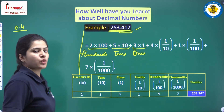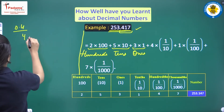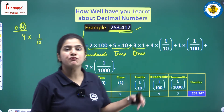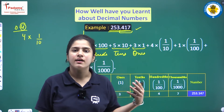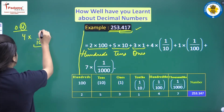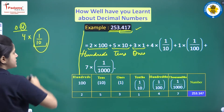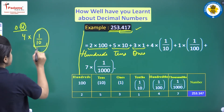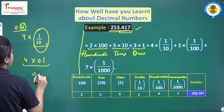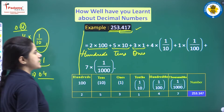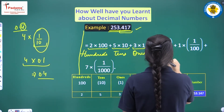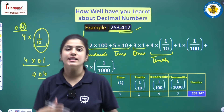0.4 — what is it? It can be written as 4 into 1 upon 10. Why? Because after the decimal, this is the first place, so it is at the tenth position. When it is at the tenth position, it is multiplied by 1 upon 10. So multiplying 4 with 0.1 gives 0.4. This is called the tenths place.